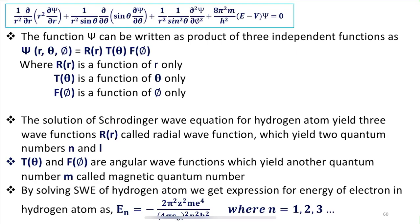The radial wave function R(r) yields two quantum numbers: n and l. Here n is analogous to the principal quantum number and l is similar to the azimuthal quantum number of Bohr-Sommerfeld theory. This is one of the interesting results deduced by studying the Schrödinger wave equation for the hydrogen atom.